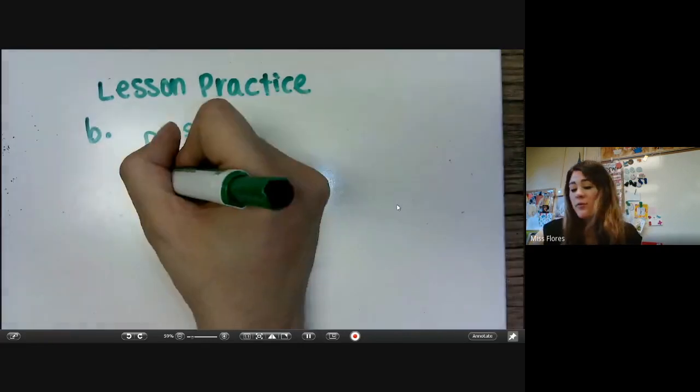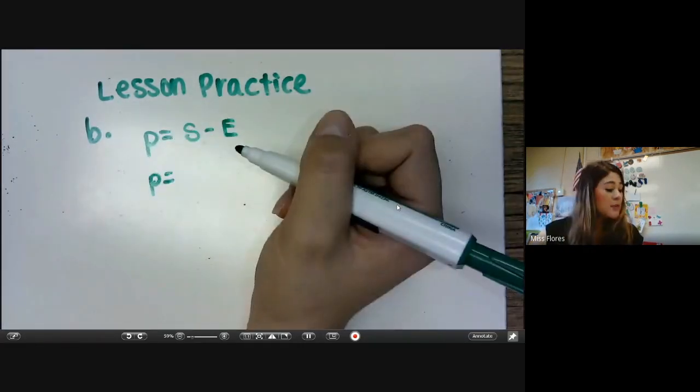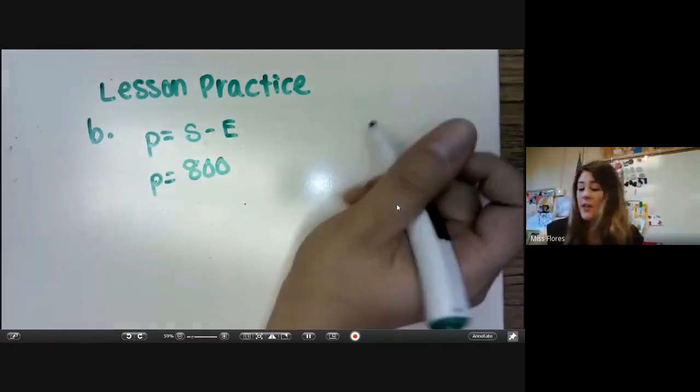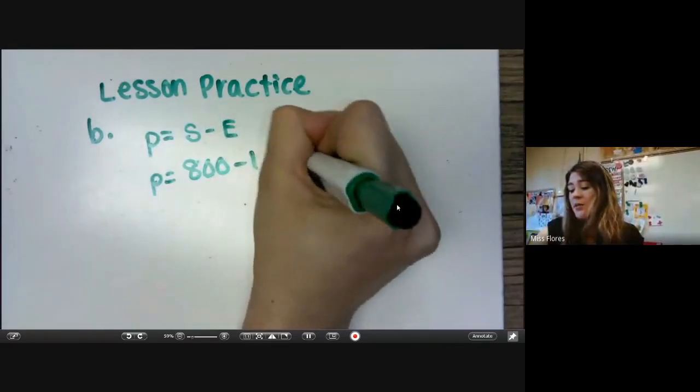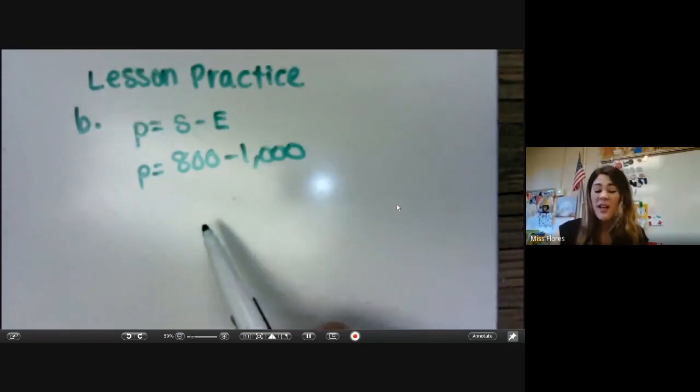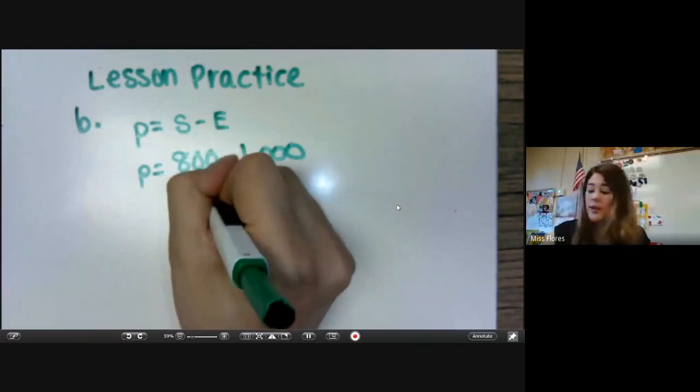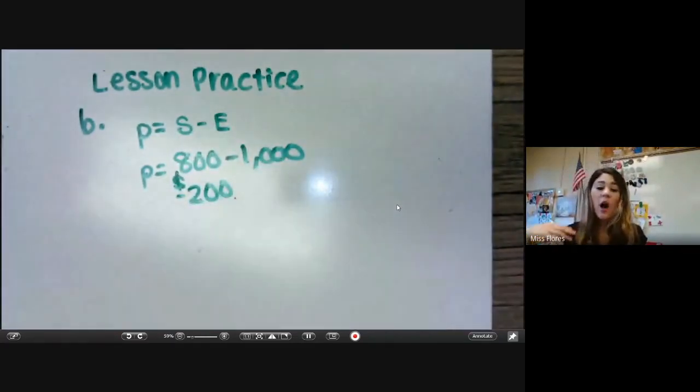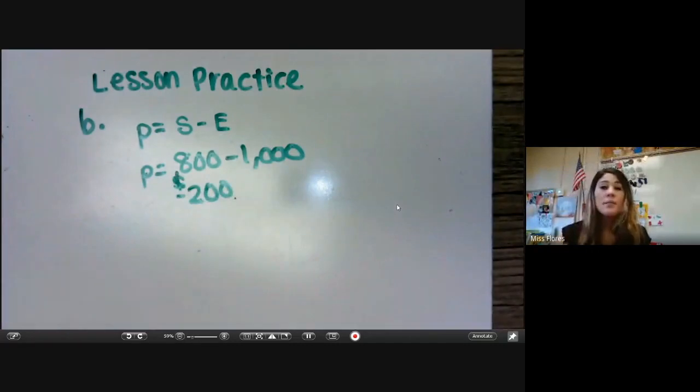So basically, what they're asking you is that the expenses were $1,000. So that means they spent of their own money, remember that profit equals sales minus expenses. And so in this case, if we were to figure out the profit, we would have to subtract our sales, which is only $800, and their expenses were $1,000. That's actually going to put us in the negative. So that means they lost negative $200. Because their expenses, that means it costs them more to make something than it did to sell something. So that means that we need to just evaluate what the question is asking.